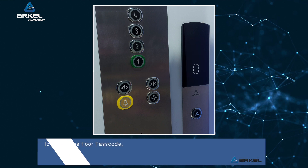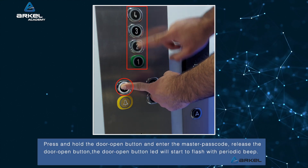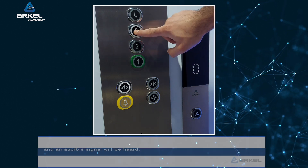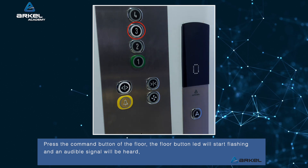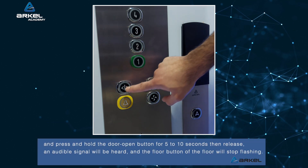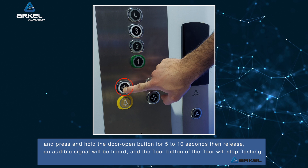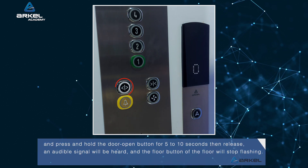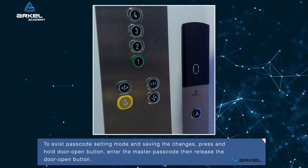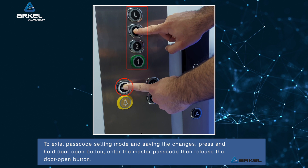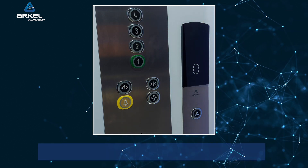To cancel the floor passcode, press and hold the door open button and enter the master passcode. Release the door open button — the door open button LED will start to flash with a periodic beep. Press the command button of the floor. The floor button LED will start flashing and an audible signal will be heard. Press and hold the door open button for five to ten seconds, then release. An audible signal will be heard and the floor button will stop flashing. To exit passcode setting mode and save the changes, press and hold the door open button, enter the master passcode, then release. The floor is now unlocked.